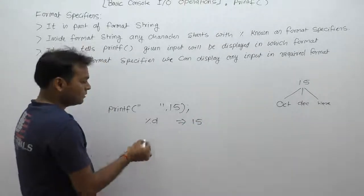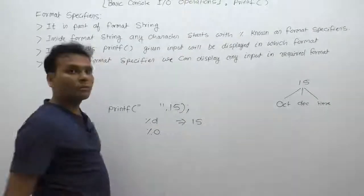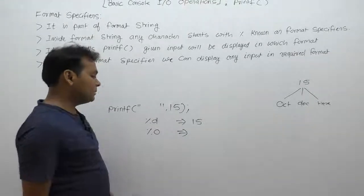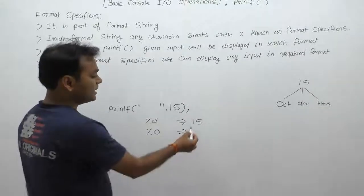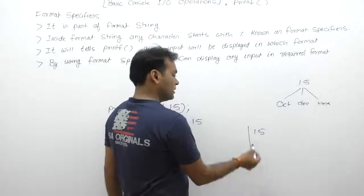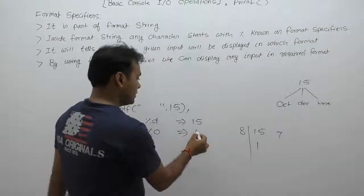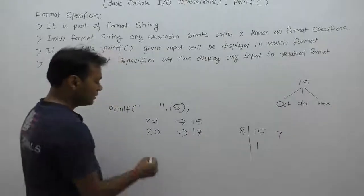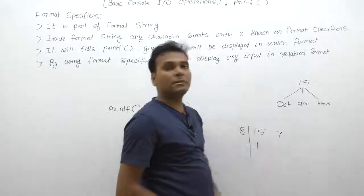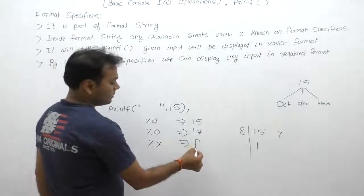If we want to display 15 in octal representation, we can supply the format specifier %o. According to %o, 15 will be displayed in octal format. The octal value of 15 is calculated as 15 divided by 8 gives quotient 1 and remainder 7, so the result is 17 in octal. Similarly, if we want to display 15 in hexadecimal representation, we supply %x, and according to that, 'f' is displayed — since 15 in hexadecimal is F.